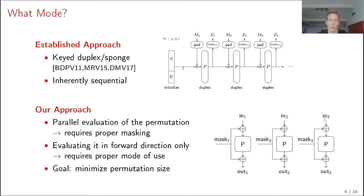And the input and the output are masked with a certain mask. Of course, this requires a proper masking. In addition, we only want to evaluate the permutation in a forward direction. So this also requires a proper mode of use. And if we do so, looking ahead, this turns out that we can minimize the permutation size, even up to a smaller size than what you can achieve in the sponge for meeting the NIST security parameters.